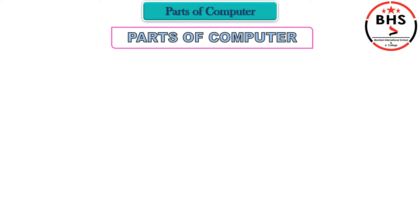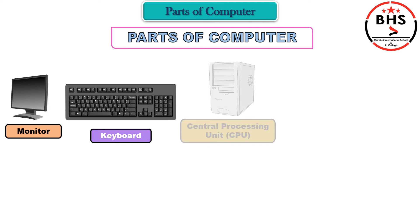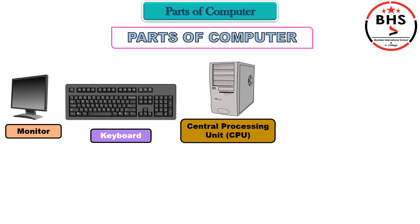Children, here are the parts of a computer: Monitor, Keyboard, Central Processing Unit (CPU), and Mouse. These are the 4 main parts of the computer. But besides these 4 main parts, there are also many other parts which are connected for different types of work.